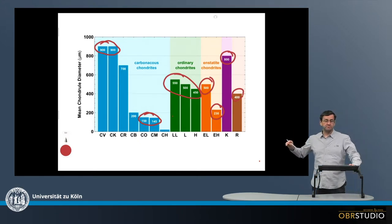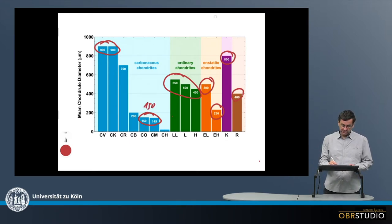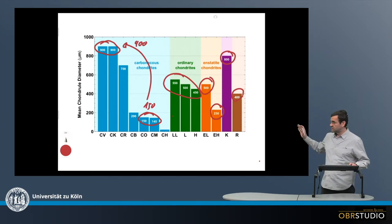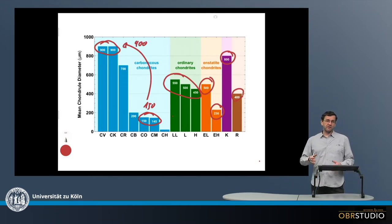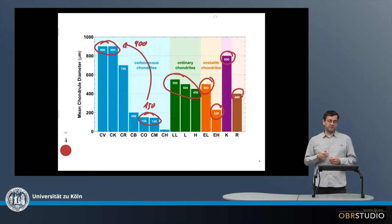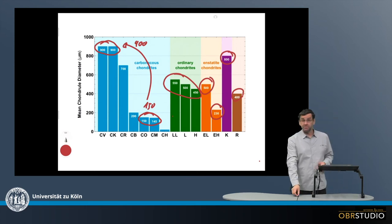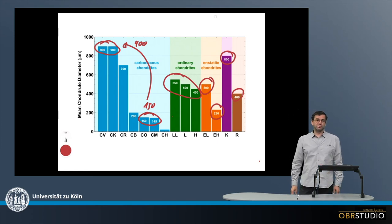The total range in carbonaceous chondrites is between something like 150 up to 900 microns — so about a factor of six. And if we include CH chondrites, which are really unusual, then it's almost an order of magnitude. So the range of mean chondrule diameters among the chondrites is about a factor of six. And this concludes the discussion of mean chondrule sizes in the various chondrite groups.